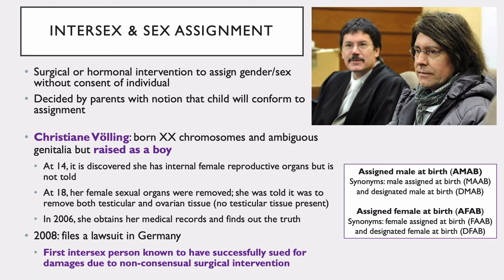Many intersex people are mutilated at infancy and early childhood by doctors to make the individual's sex characteristics conform to society's idea of what normal bodies should look like. A particular example of this involves parents making these decisions for children to help them conform to one sex assignment over the other. This particular case is Christiane Wolling, who was born with XX chromosomes — the typical expression for a female — but had ambiguous genitalia. She was raised as a boy, per her parents' decision.